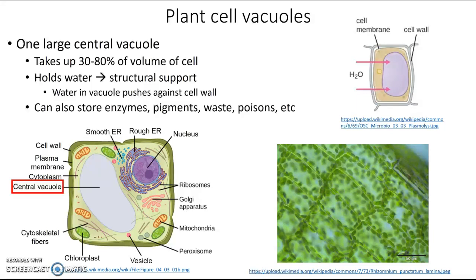The vacuole can also store other things for the plant cell, such as enzymes, pigments, waste, and maybe even poisons or toxins depending on what kind of plant it is. Sometimes plant cells will also have smaller vacuoles that store other enzymes or pigments, but the main one to know about is this really big central vacuole.